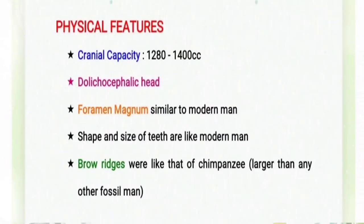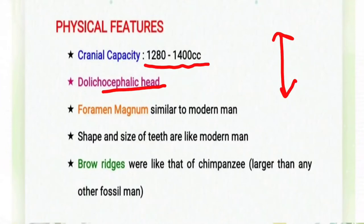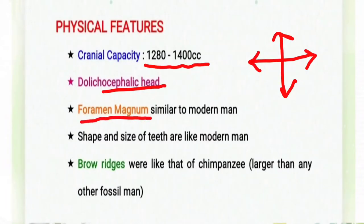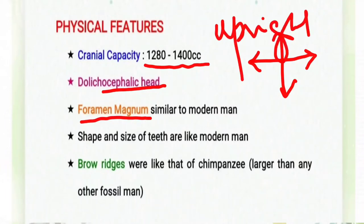Moving forward to the physical features of the Rhodesian Man: the cranial capacity is 1280 to 1400 CC. It has a dolicocephalic head, meaning it is quite longer in length and narrower in breadth. The foramen magnum is similar to that of modern man — it is anteriorly placed and occupies a central position, which indicates a perfect balance of the skull on the vertebral column, giving an upright position.